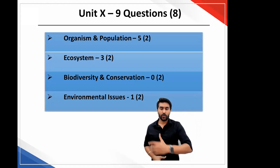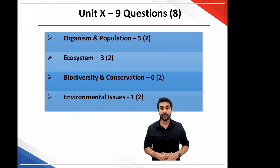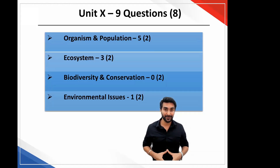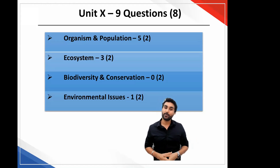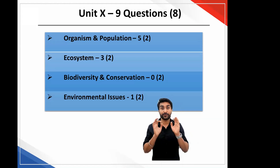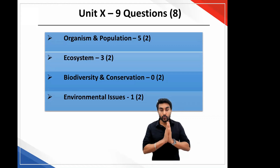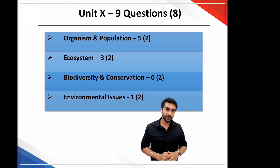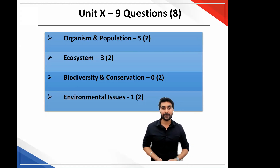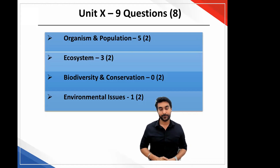The last unit — the ecology unit — again had an uneven distribution. There wasn't a single question from the biodiversity chapter, which was not expected. There were 5 questions from organisms and population — uneven again — and from those, the adaptation paragraph alone had 2 questions. There were 3 questions from ecosystem, no question from biodiversity, and just a single question from environmental issues. If you see last year, it was very evenly distributed with 2 questions from each chapter. So this year that was not followed. In the next year, I expect this to be rectified and an even distribution of 2 questions from each chapter in this unit.